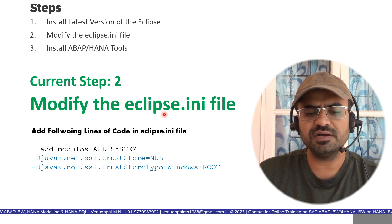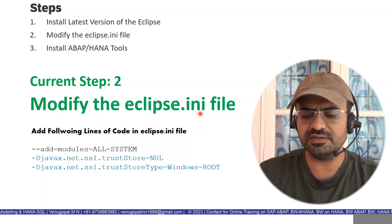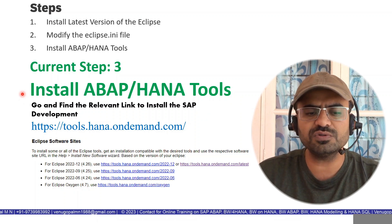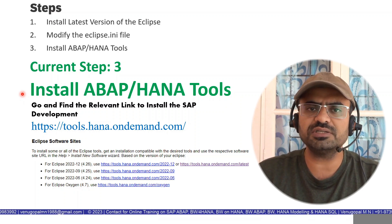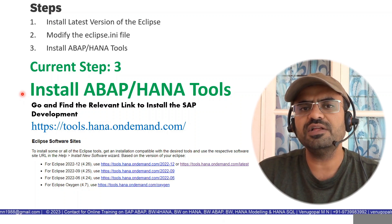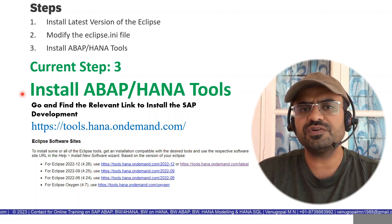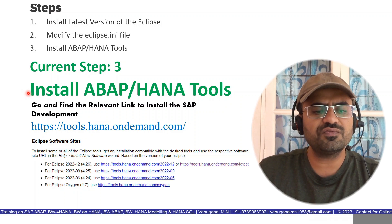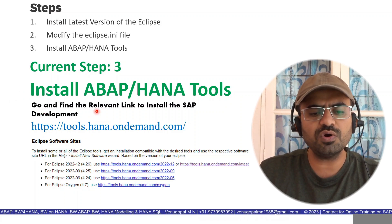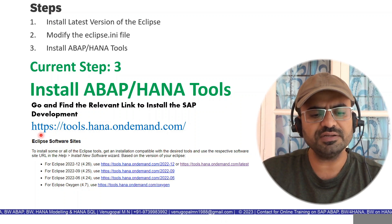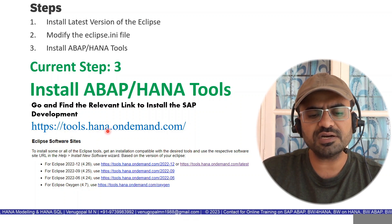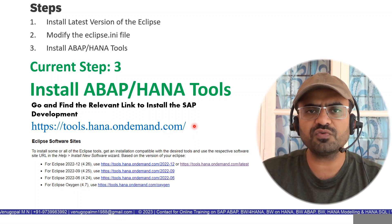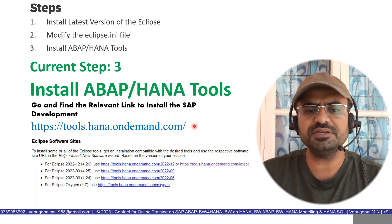We have completed step two — modification of the eclipse.ini configuration file. The following step is to install the necessary SAP or HANA tools needed for your actual development. If you are a BW-related consultant, you need BW-related tools; if you are a native HANA consultant, you need SAP tools for native HANA modeling. To perform this step, you have to go and find the relevant link to install SAP tools from this portal: https://tools.hana.ondemand.com.